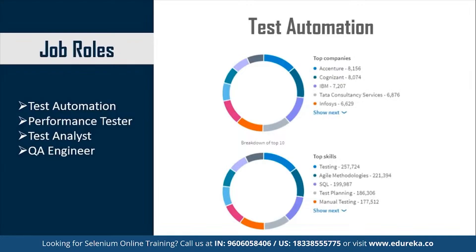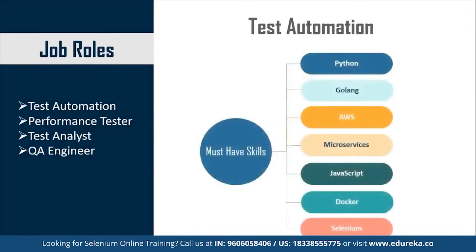The top skills required to become a test automation engineer include knowledge of testing, agile methodologies, SQL, test planning, and manual testing. Apart from these, you need to be well acquainted with programming languages like Python, Golang, and JavaScript. You also need to be well versed with AWS, microservices, Docker, and Selenium. These skills will help you move to a higher position and also add to your appraisal.